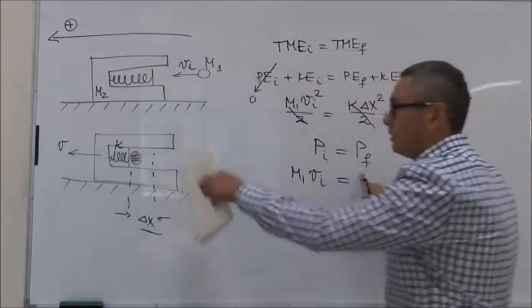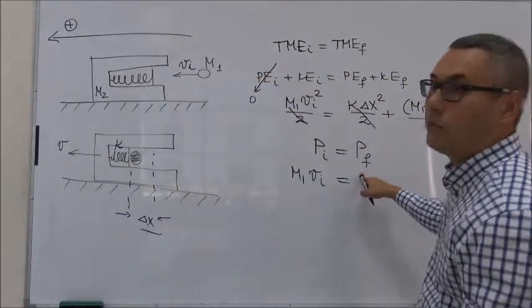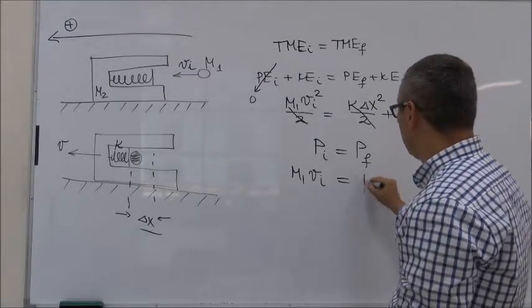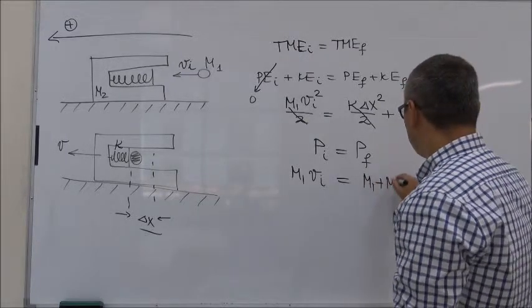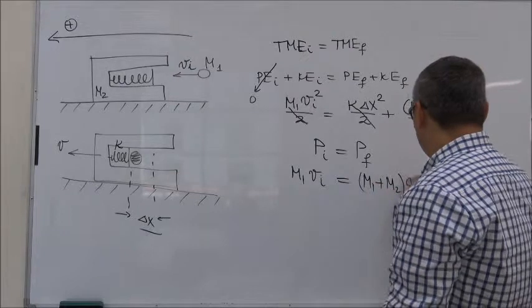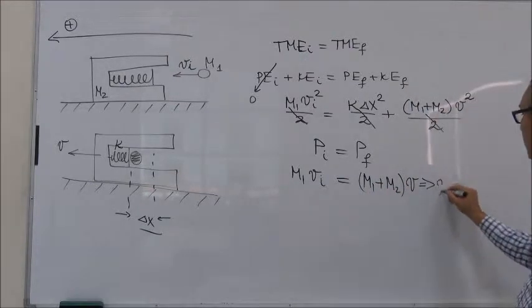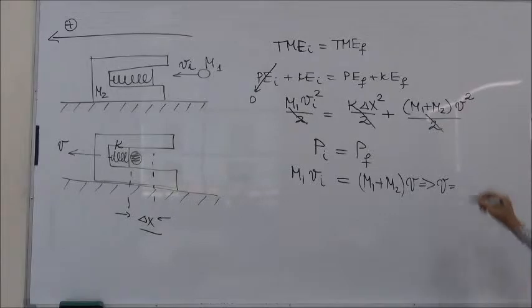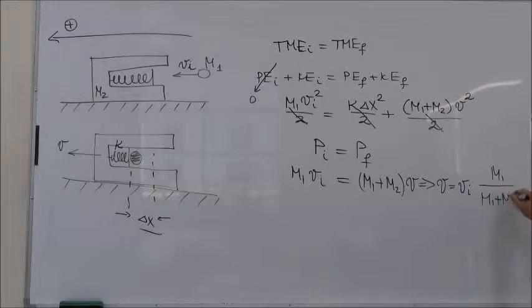In the final state, the ball and the barrel are moving, so this is equal to M1 plus M2 times V. So from here, V is equal to V initial M1 over M1 plus M2.